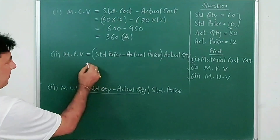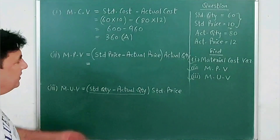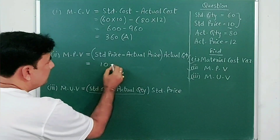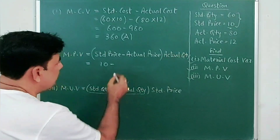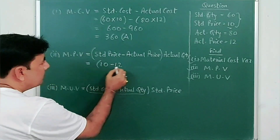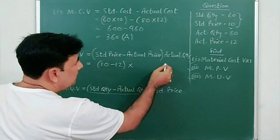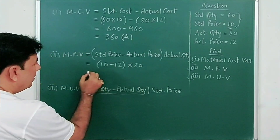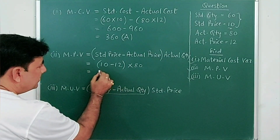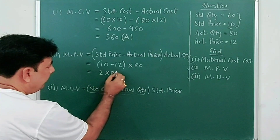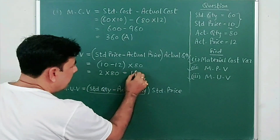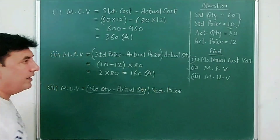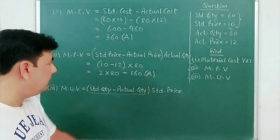For material price variance: standard price is ₹10, actual price is ₹12, multiplied by actual quantity of 80. So that is 10 minus 12, which gives 2 into 80, equal to 160. This is also adverse, so don't forget to write 'A'.